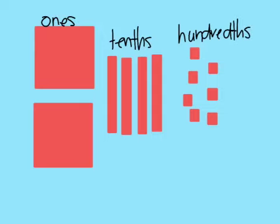This number would show 2.47. I've got two ones here, I've got four tenths, and I've got seven hundredths.